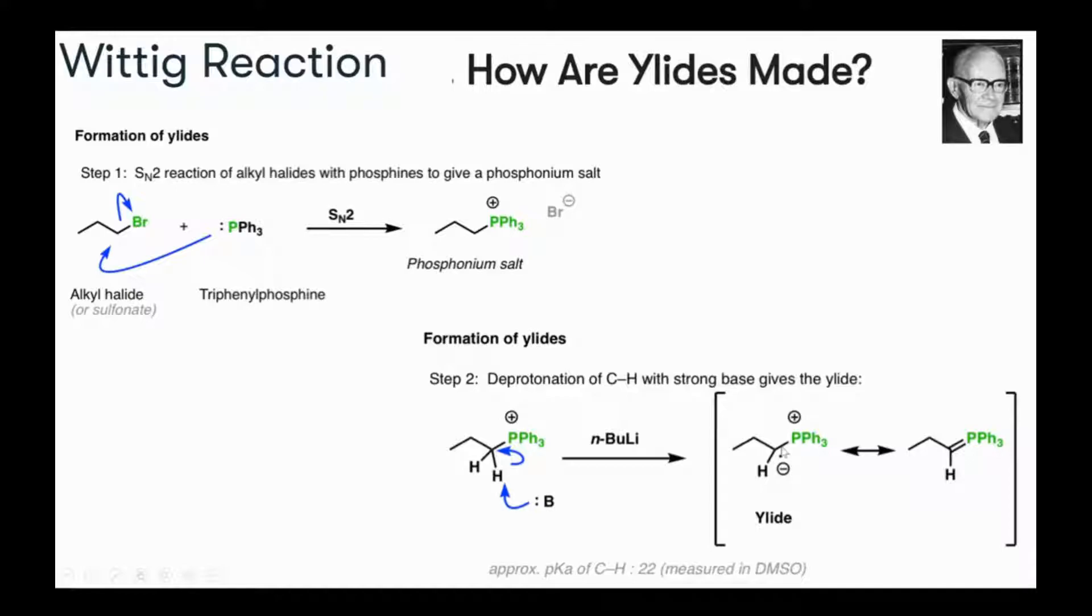The negative charge can go inside to make a double bond between carbon and phosphorus to remove all the charges. These are the two resonance forms of a ylide, and this is how ylides are formed in Wittig reactions. You could select any alkyl halide based on your requirements of synthesis.